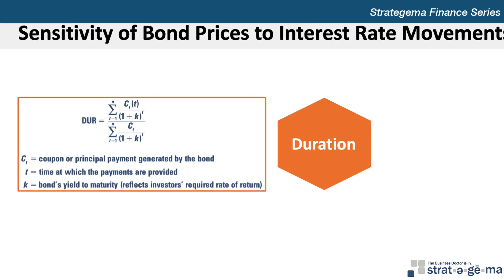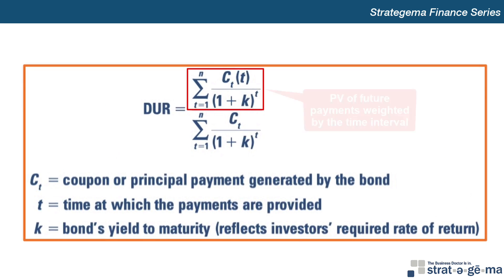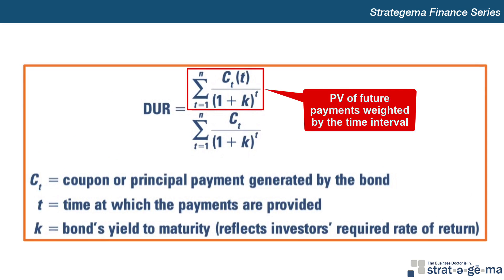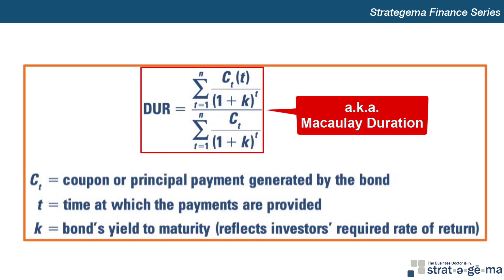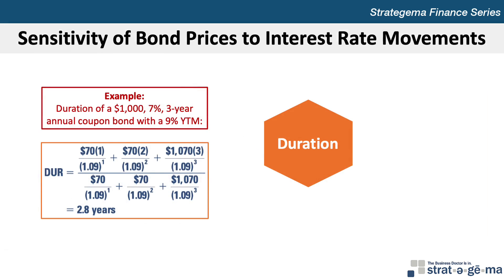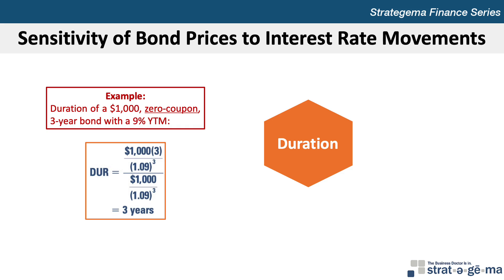The numerator of the duration formula represents the present value of future payments weighted by the time interval until the payments occur. The longer the intervals until payments are made, the larger the numerator and the duration are. The denominator represents the discounted future cash flows resulting from the bond — which is the present value of the bond. This duration measure is also called the Macaulay duration. Using this formula, the duration of a bond with a $1,000 par value, a 7% coupon rate, 3 years remaining to maturity, and a 9% yield to maturity is calculated to be 2.8 years. By comparison, the duration of a zero-coupon bond with a similar par value and yield to maturity is 3 years.